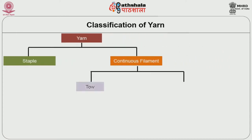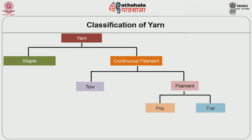For continuous filament yarns, there are two types: tow type yarn and filament type yarn. Under filament type yarns, there are partially oriented yarns, fully oriented yarns, and flat yarns. These yarns can be converted into textured yarns using a bulking process, specifically for manufactured fibers.